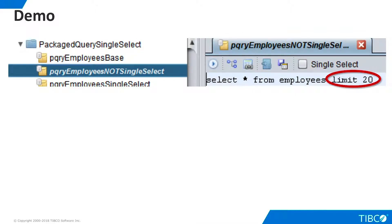We will begin by showing the processing flow when the single select option is not chosen. This packaged query uses the non-standard limit keyword, which Postgres uses to limit the number of rows returned by a query. Note that the single select option is not chosen.